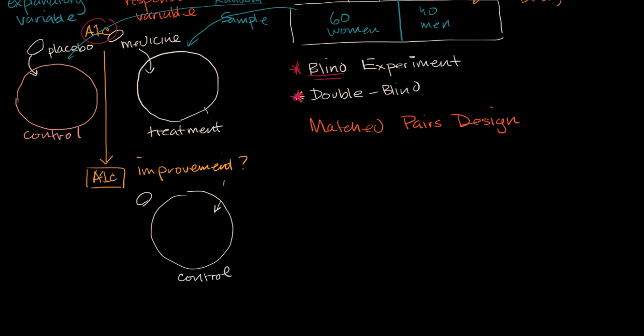So they got the medicine for the first three months, and we saw what happens to their A1C, and now they're going to get the placebo for the second three months, and then we are going to see what happens to their A1C. And likewise the other group is going to be switched around. The folks that used to be getting the placebo could now get the treatment.